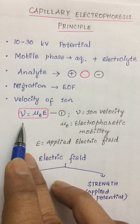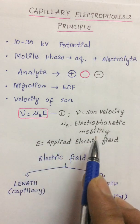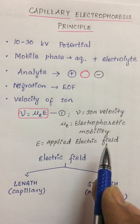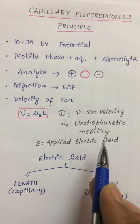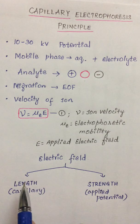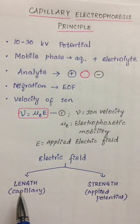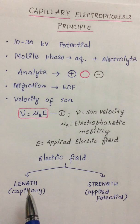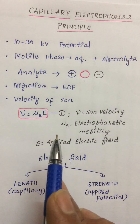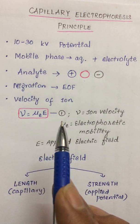In the instrumentation, the velocity of the ion, ν, is given by the equation ν = μe × E, where μe is the electrophoretic or ionic mobility and E is the applied electric field in volts per centimeter. The electric field depends on two important factors: the length of the capillary and the applied potential. Higher potential gives a higher electric field, while increasing capillary length decreases the electric field.